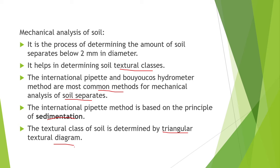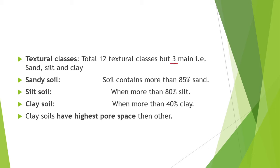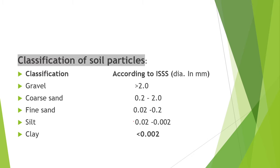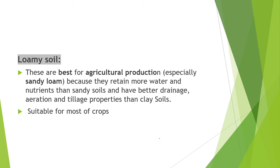The International Pipette method is based on the principle of sedimentation. The textural class of soil is determined by the triangular textural diagram. There are 12 textural classes in total, but the 3 main ones are sandy, silt and clay. In sandy soil, sand is present more than 85%. In silt soil, silt is greater than 80%. In clay soil, clay is more than 40%. Clay soil has the highest pore space.